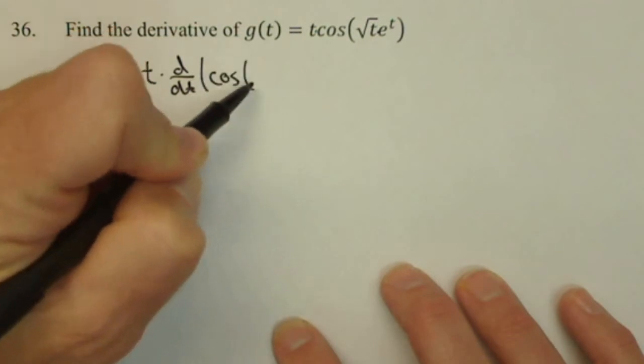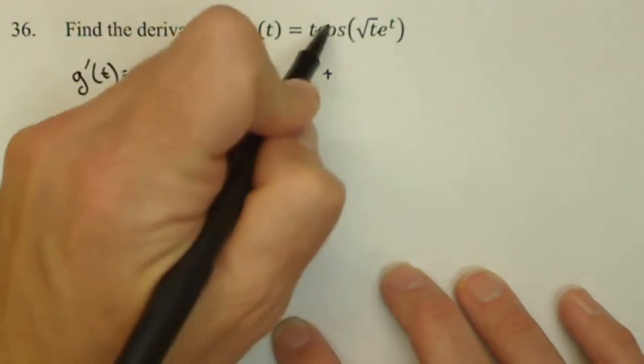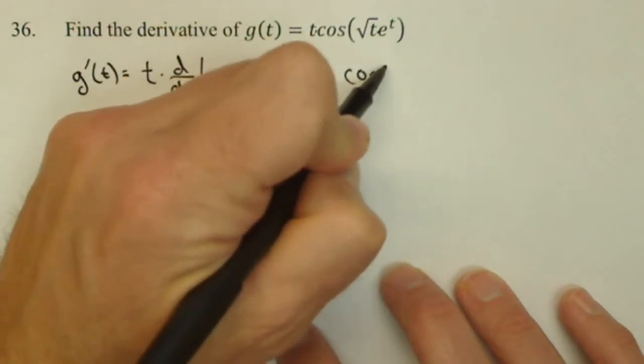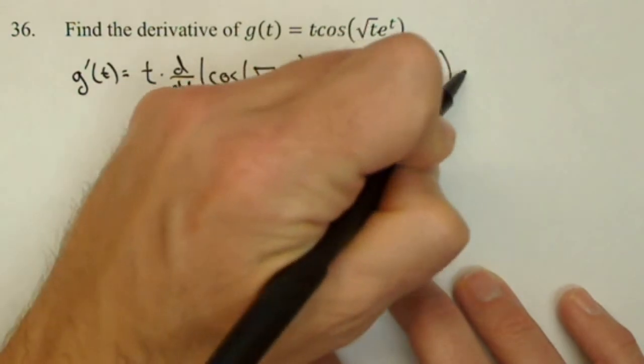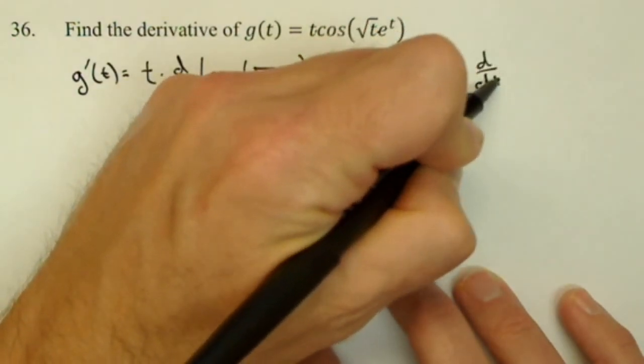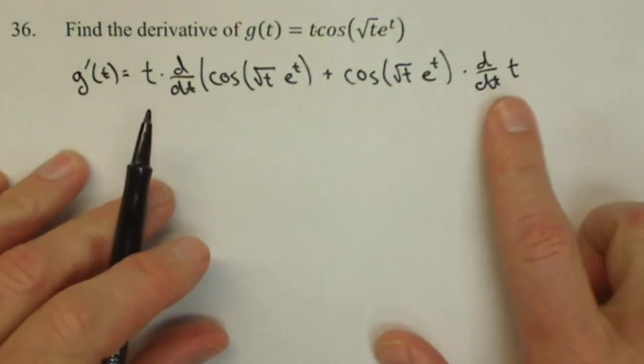I'm going to have t times the derivative with respect to t of cosine of square root of t e to the t plus, now this time I'm going to leave this part alone, cosine square root of t e to the t times the derivative with respect to t of t. This is a nice easy derivative, it's just one.